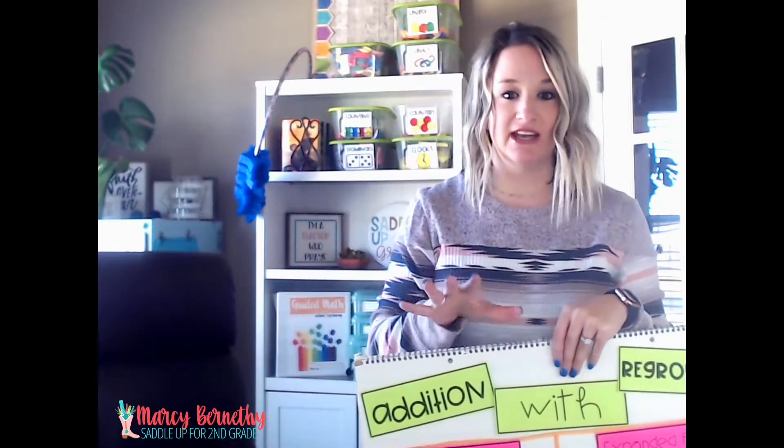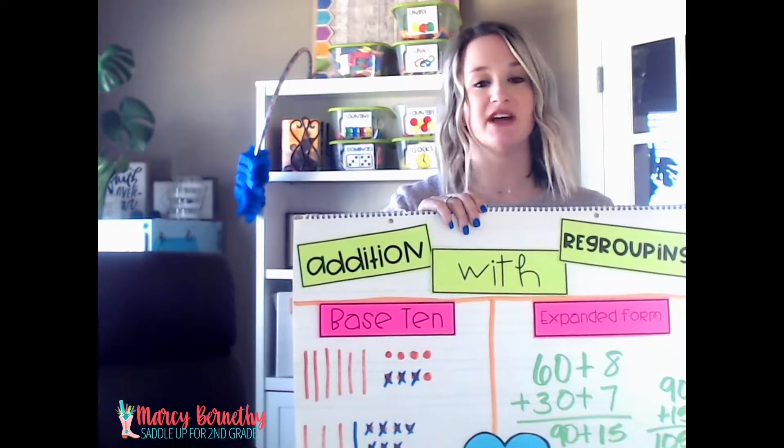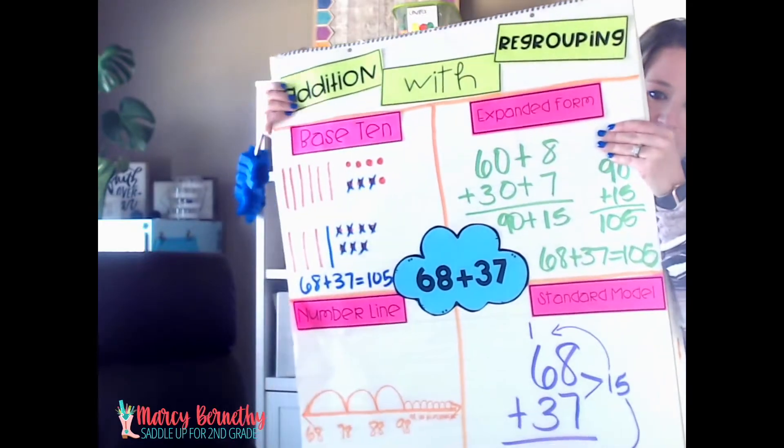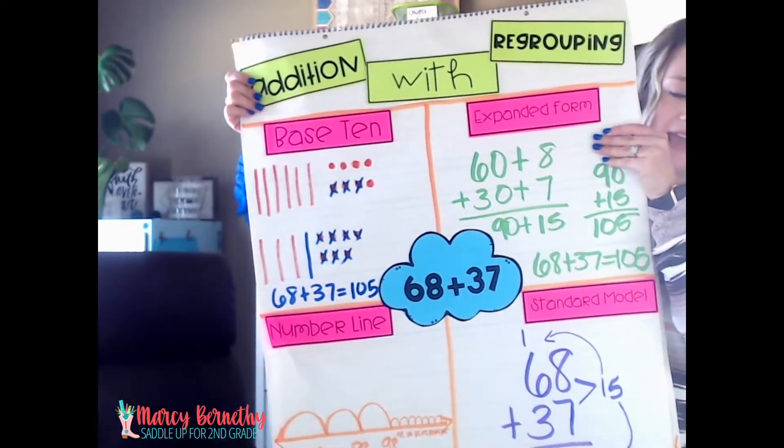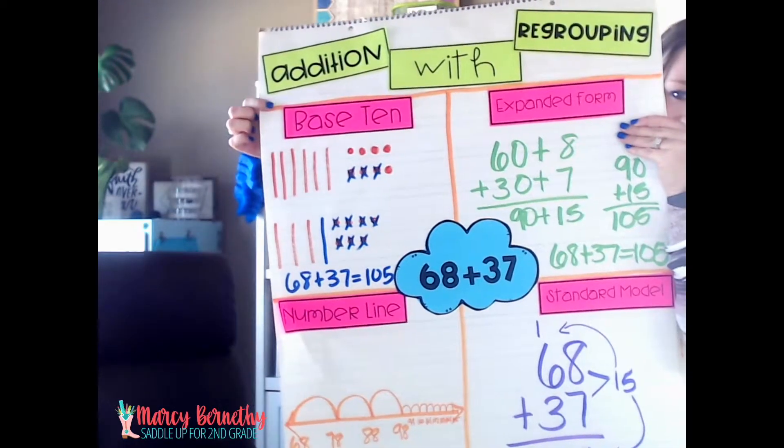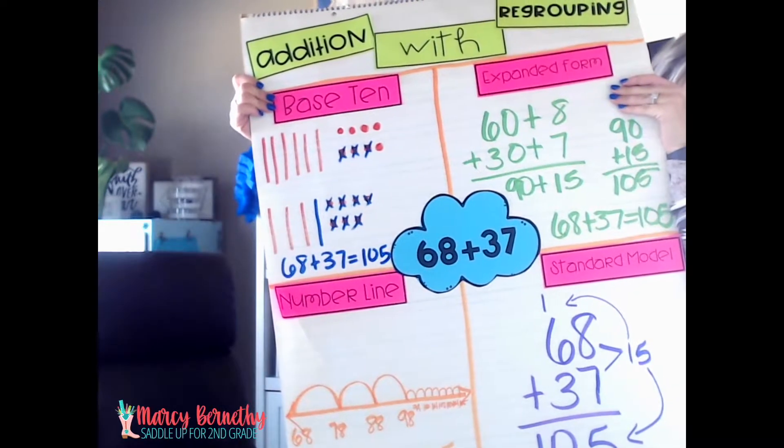So one of the things I do at the beginning of any new math unit that I'm introducing is with my students, we create a whole group anchor chart. This is the one that I use for regrouping and I expose them to four different strategies. So today I'm going to share the base 10, expanded form, open number line, and the standard algorithm.